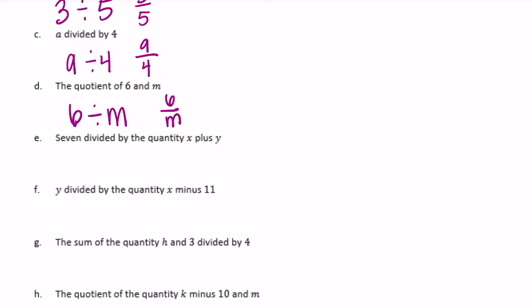7 divided by the quantity x plus y: we write 7 ÷ (x + y), keeping x plus y in parentheses to keep those terms together. As a fraction, that's 7 over x plus y.